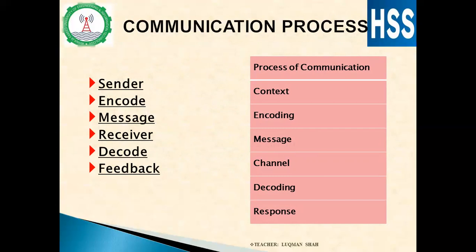In any communication process, normally these elements will be present. First, the sender — a person who originates the information. The sender will encode the message; 'encode' means to put into language or code according to context and situation. Then there is the message — the information or data which is meant for the receiver and which is sent by the sender.